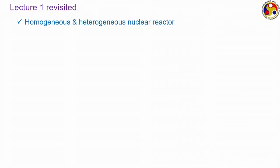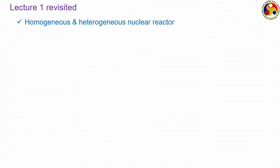We discussed homogeneous and heterogeneous nuclear reactors. In a homogeneous nuclear reactor there is a uniform distribution of fuel and moderator. Most homogeneous reactors are of aqueous solution type, where an aqueous solution of a nuclear salt like uranium sulphate or uranium nitrate is present, and a sample taken from anywhere in the reactor gives the same chemical composition.